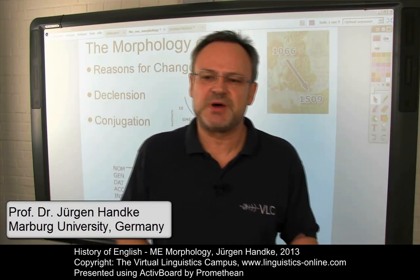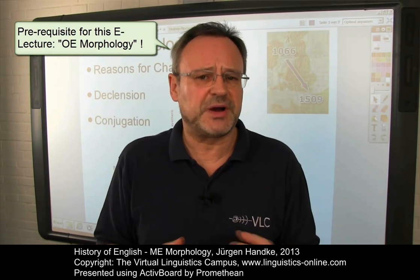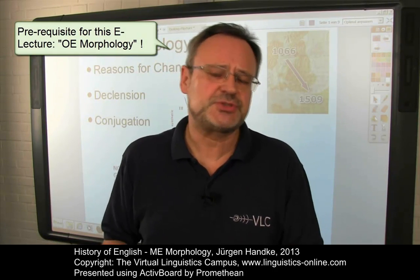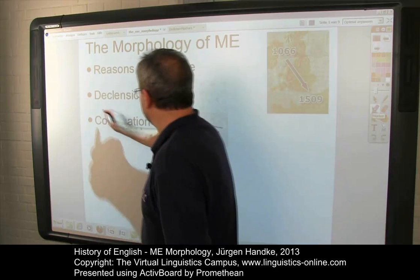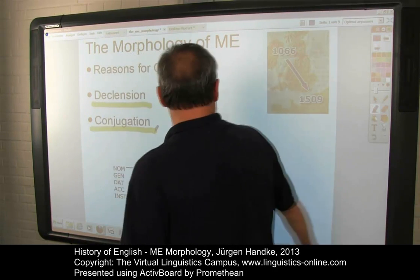The Middle English period is marked by the great reduction in the inflectional system inherited from Old English. This tendency was accelerated by the social upheaval and the mixture of tongues that the Norman conquest brought about, but it was already noticeable in Old English from the end of the 10th century. This e-lecture summarizes the main developments in Middle English morphology. As usual, we will look at declension and conjugation.